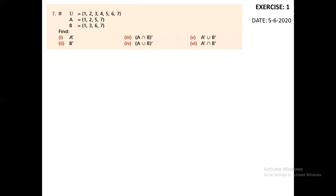Now let's come to question number seven. U = {1, 2, 3, 4, 5, 6, 7}, A = {1, 2, 5, 7}, and B = {1, 3, 6, 7}. These are the sets. As we know, U is the universal set — one of the largest sets among all the sets. A is a set and B is a set.